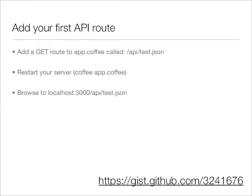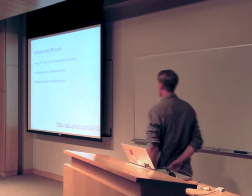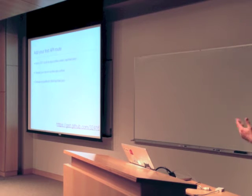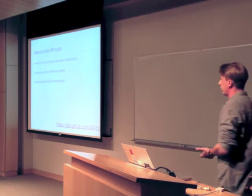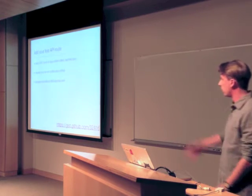So, now let's add our first route. We're going to add just API slash test dot JSON. And then we've got to restart our server. I'll talk about how there's tools so you don't have to do that, just like Sinatra has its own tool. But we're just going to restart stuff by hand for now, and then we're going to browse to that.